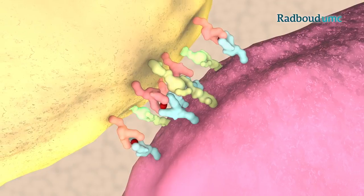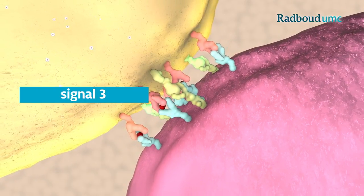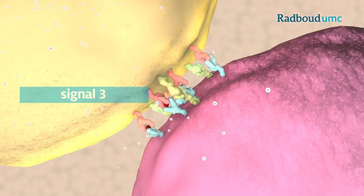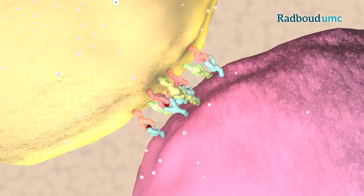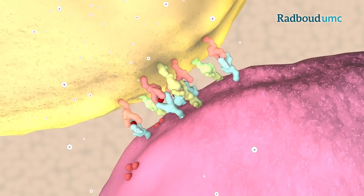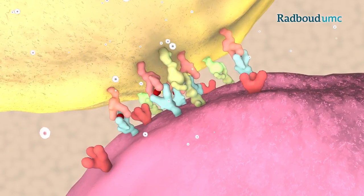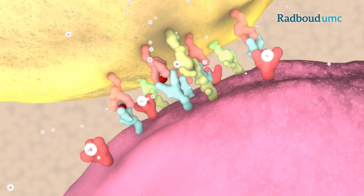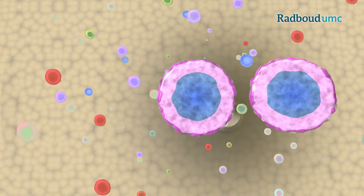Finally, a third signal, in the form of soluble proteins called cytokines, completes the T cell activation program. These cytokines are secreted by the dendritic cells, diffused to the T cells, and are recognized by specialized structures on their surface. The T cells are now fully activated.